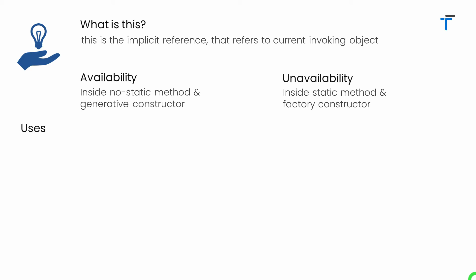Let's understand the different uses of this reference. The most common use is to access members of a class, especially when there is a name conflict — meaning the class contains a field and a local variable that have the same name. In such a situation you can see the most useful application of this.